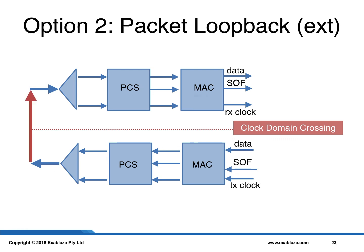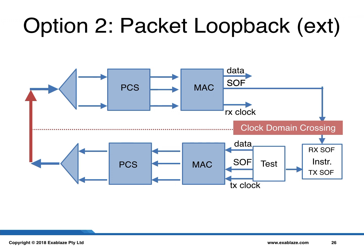The next measurement option is an external packet loopback. In this measurement, we connect a cable from the transmit side to the receive side, and a test harness that generates new packets. When the test harness generates a packet, it registers it with instrumentation such as ChipScope. When a packet is received, the start-of-frame signal is crossed into the clock domain of the instrumentation and a comparison can be made.